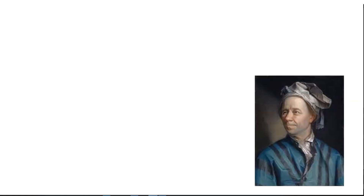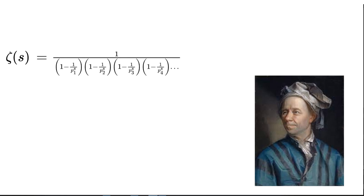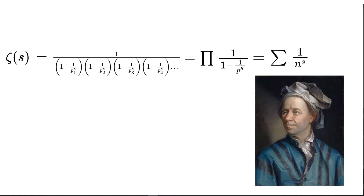This isn't the only thing Euler managed to pull from the zeta function. In addition to solving the Basel problem, he also found a way to rewrite the zeta function as an infinite product — an infinite product of 1 over (1 minus the reciprocal of the prime numbers raised to some complex exponent s). A much cleaner way to write an infinite product is using a capital pi. Normally we see sigma for repeated summation, whereas pi represents repeated multiplication. Euler's product formula connects the zeta function to the prime numbers.